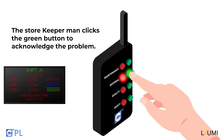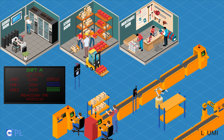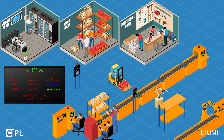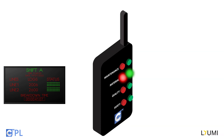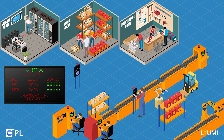The storekeeper is alerted on their mobile device and springs into action. They reach the Undawn station and click the acknowledgement button. Once they have done this, they refill the raw materials needed to get the production line moving again. The beauty of the Undawn system is that the breakdown time is automatically tracked once the raw materials have been refilled. The supervisor then pushes both the problem and acknowledgement buttons to indicate to management that the raw material issue is solved.